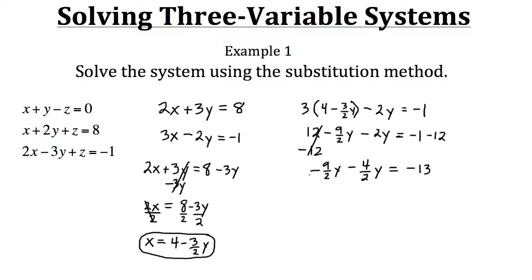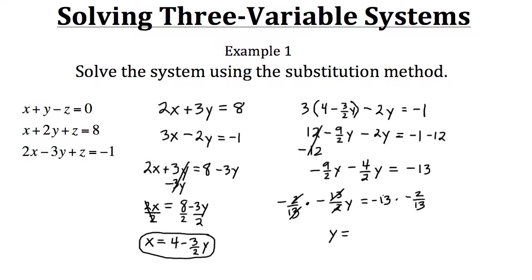Combining the y terms: negative nine-halves y minus four-halves y gives us negative thirteen-halves y, which equals negative thirteen. To isolate y, we multiply both sides by the reciprocal of negative thirteen-halves, which is negative two over thirteen. The thirteens cancel, the twos cancel, and negative times negative gives us a positive y. On the right side, negative times negative two gives us positive two. So y equals two.